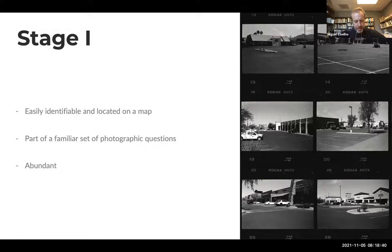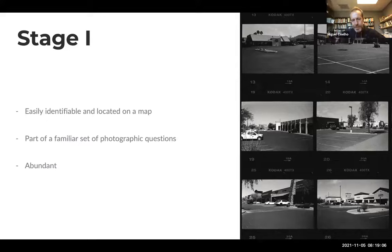For Stage One, the subject needed to be easily identifiable and located on a map, part of a familiar set of photographic questions I was used to dealing with, and abundant enough to photograph. The idea of something photographically familiar to me was just to make it easier to start. I decided to photograph strip malls — they were easily identifiable on Google Maps without even zooming in, so it would be a fairly easy first stage.